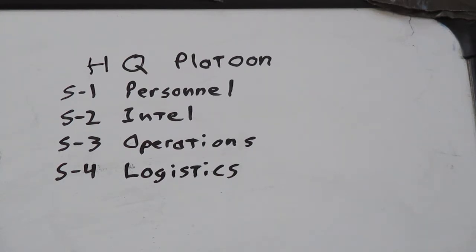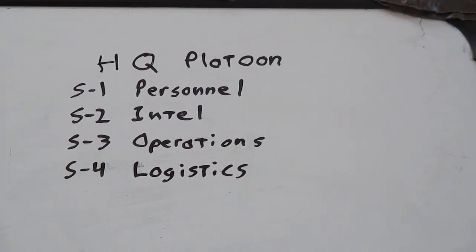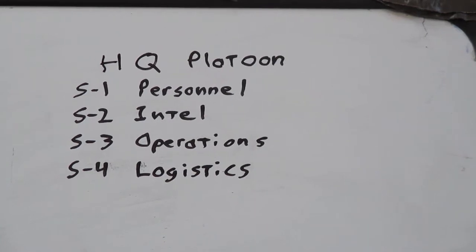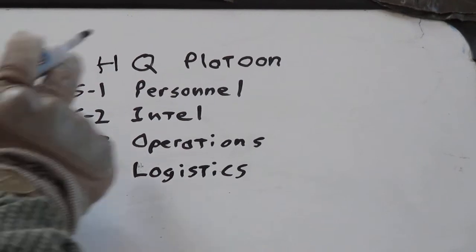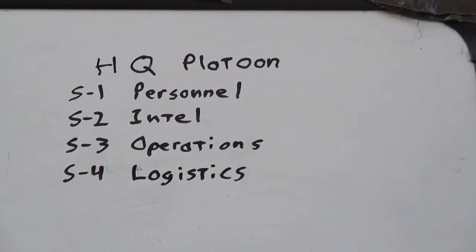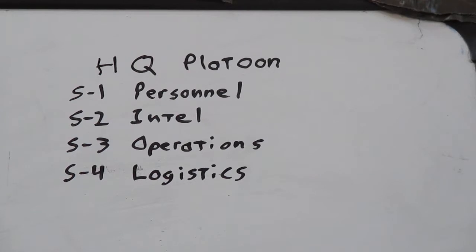Something I've been thinking about for a while is what would we need in a headquarters in a militia? Well, first off, we'll need something similar to a battalion S-1, a personnel section. The personnel section could be one or two people. They're going to be tracking how many people are in the company, how many are combat effective, how many are sick, wounded, or currently going through training.